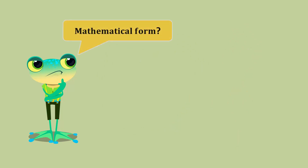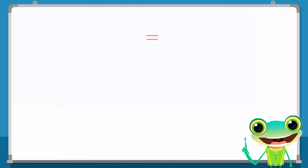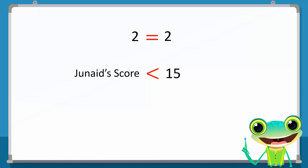In mathematics, we compare various quantities or numbers by using different symbols. For example, the equal to symbol is used to show that two quantities or numbers are equal. To show that a number is less than another number, we use this symbol. Going back to the example, we write that Junaid's score is less than 15.